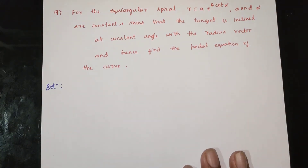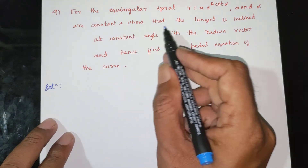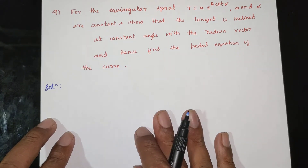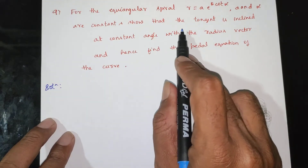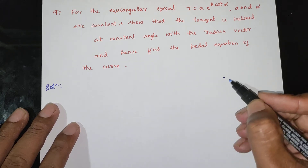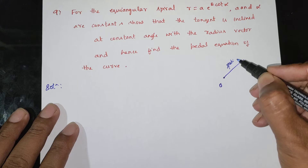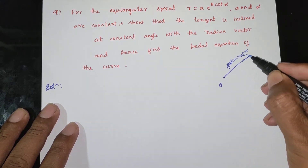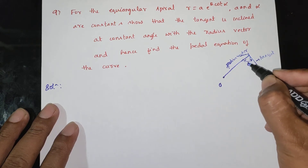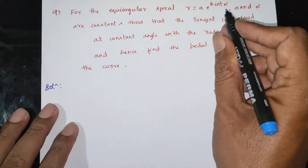For the equiangular spiral, R is equal to A into e power theta cot alpha, where A and alpha are constants, so that the tangent is inclined at a constant angle with the radius vector. This is the origin and pole. This is the radius vector, this is the tangent, and this is the angle between the radius vector and the tangent.